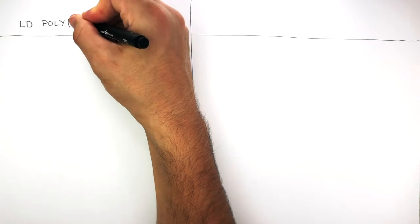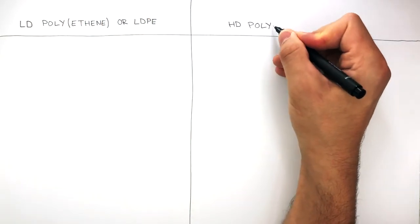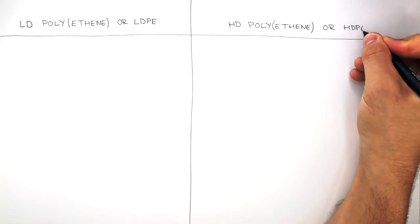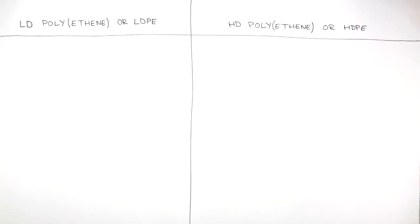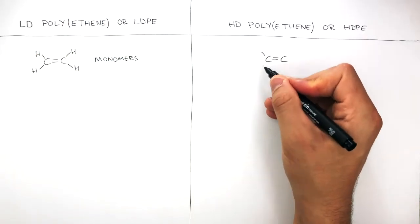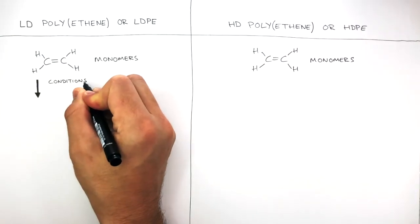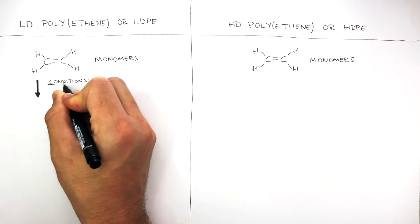We're now going to compare the similarities and differences between low-density polyethene, or LDPE, and high-density polyethene, or HDPE. Both types of polyethenes are made from ethene monomers, C2H4, showing the carbon-carbon double bond. However, it's the conditions in which the monomers react together, which are different, that makes the polyethenes different.